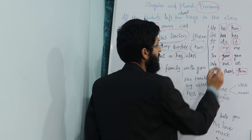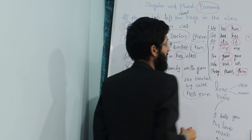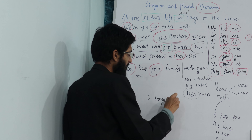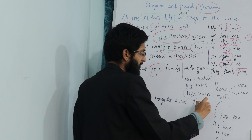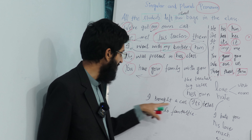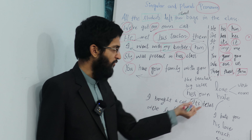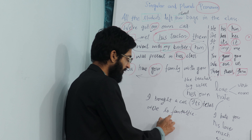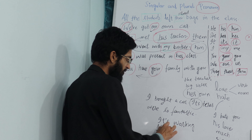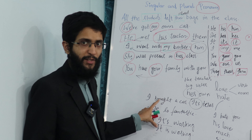One important thing you have to remember: 'its' without apostrophe. You don't have to use an apostrophe here. What is the rule of the apostrophe? When you say 'I bought a car — its tyres were so fantastic,' here you have used a possessive case to show the possession of the car with its tyres. So 'its' is without apostrophe. The second form is 'it's' — this is 'it's working,' which is actually 'it is working.' So 'it's' with apostrophe means 'it is.' Don't mix these two things.